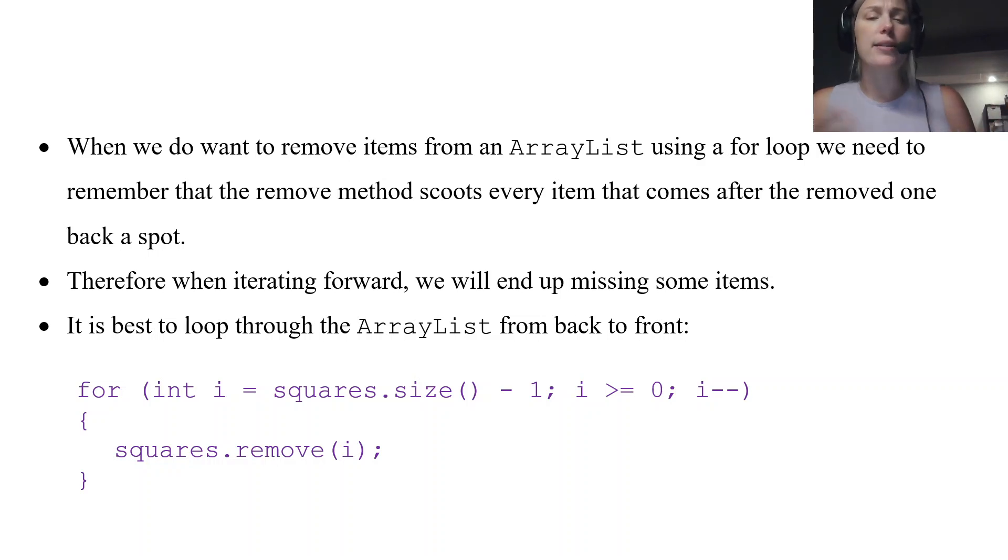Another way, another logical way some students think of too, is you can still move forward with your traversal, but then you just offset the i. Which is kind of a weird roundabout way to do it, but it also works, is just manipulating your i a little bit more inside of your for loop so that it doesn't skip any elements.